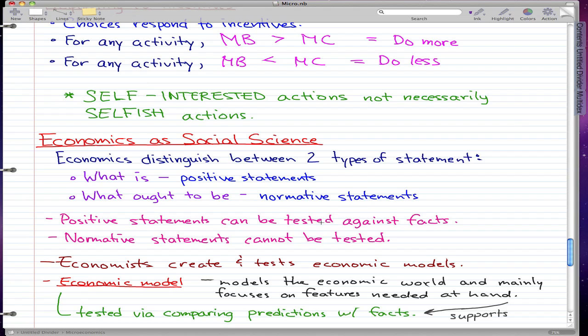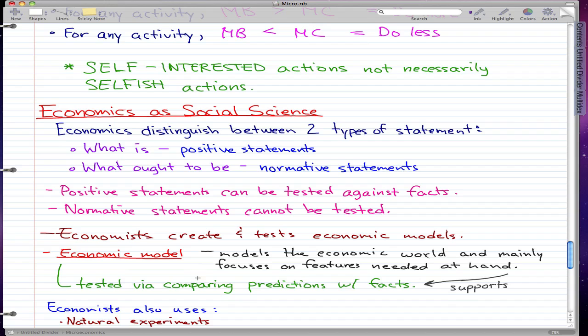So what is the weather tomorrow is a normative statement because we cannot test it accurately or super accurately. But I guess we can in the future because technology is just getting better and better. That's just a good enough example because I can't think of another one right now.